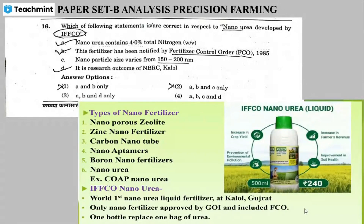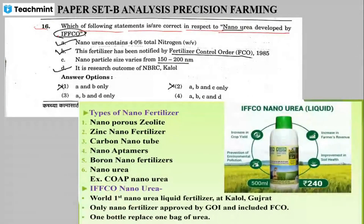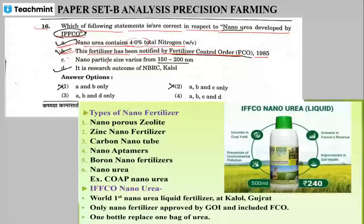Take any paper — the analysis article asks: which of the following statements is correct in respect to nano urea developed by IFFCO? Option A: it contains four percent total nitrogen — that is correct. Option B: this fertilizer has been notified by the Fertilizer Control Order 1985 — that is also correct. Option C: nanoparticle size varies from 150 to 200 nanometers.